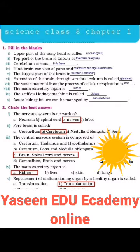Upper part of bony head is called cranium skull. Top part of the brain is known as forebrain — cerebrum.